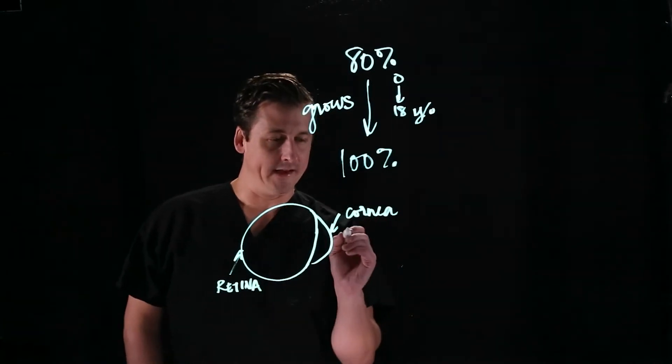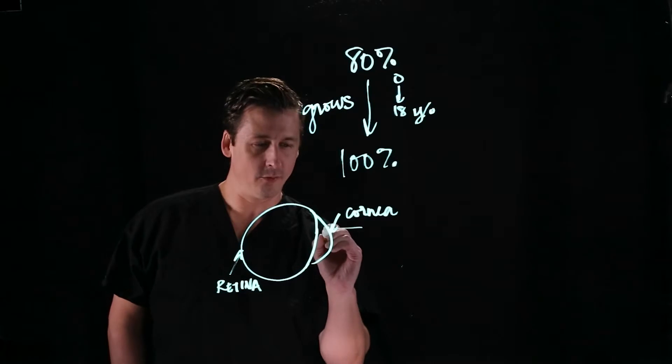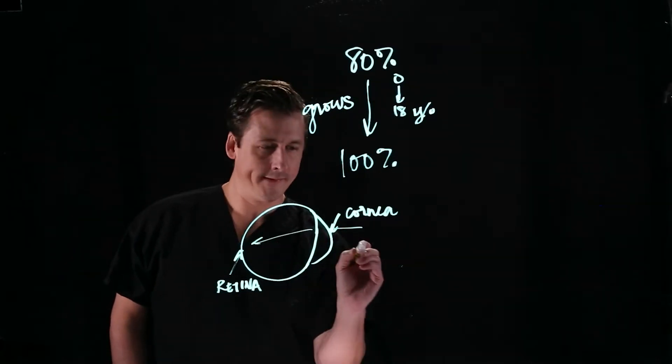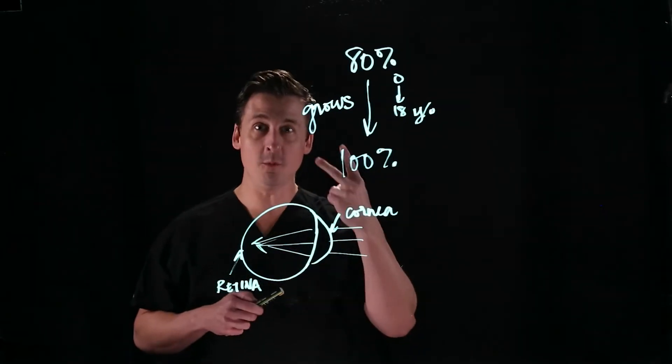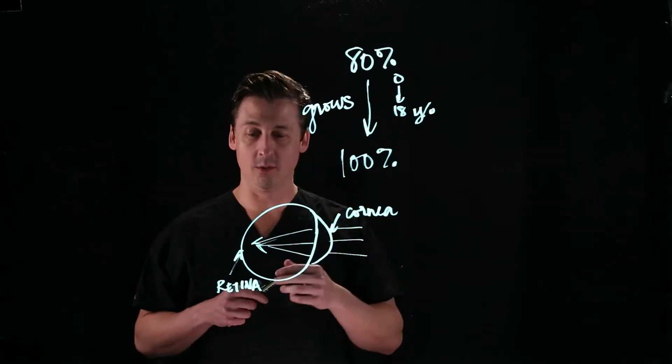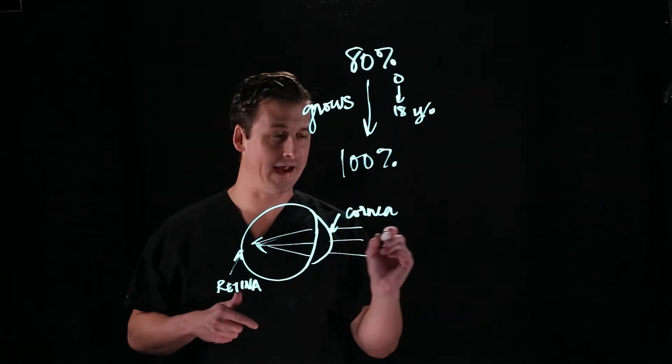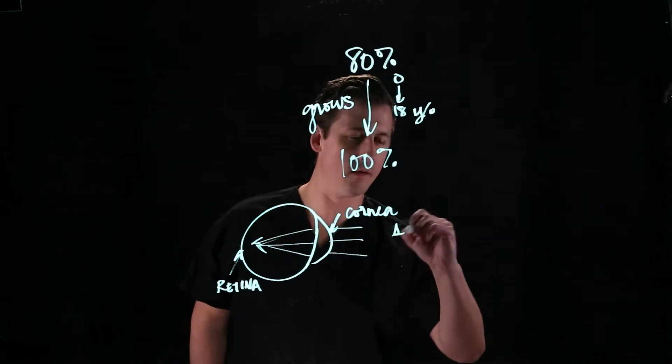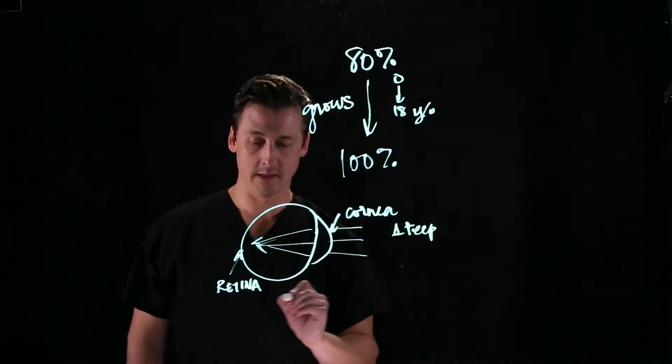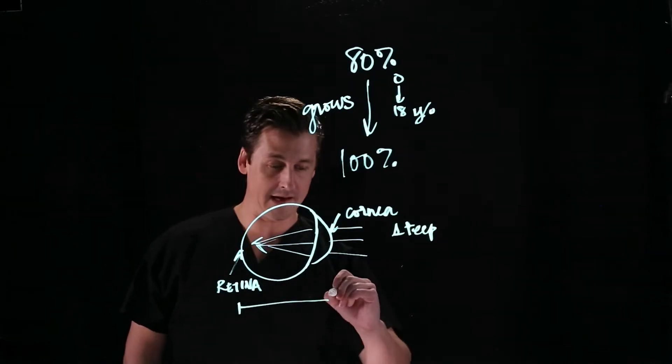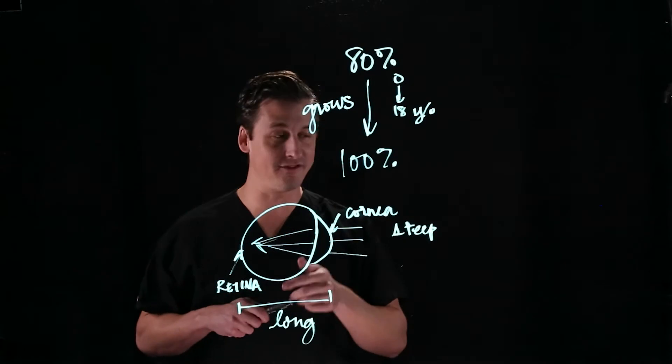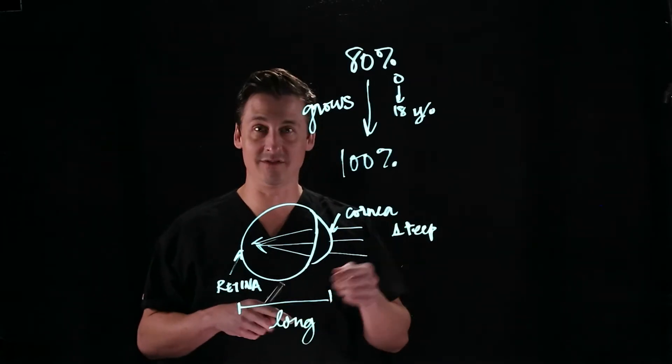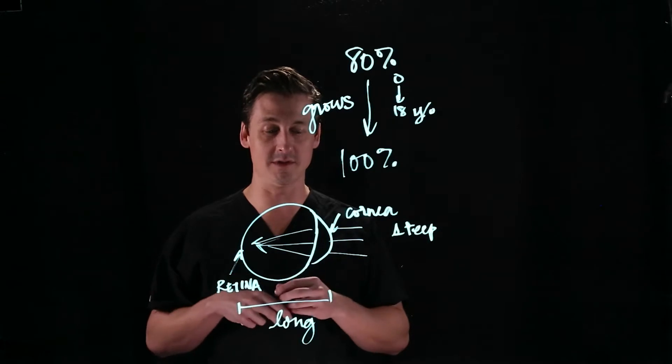As light comes into your eye, it gets focused through your cornea and then gets turned inward like this. And that's what gives you an image as it comes in. There are two main features that determine what your prescription is. One is this cornea. How steep is this cornea? And the other one is this. How long is the eye from front to back? That's called the axial length. These two things determine almost entirely what your prescription is going to be.